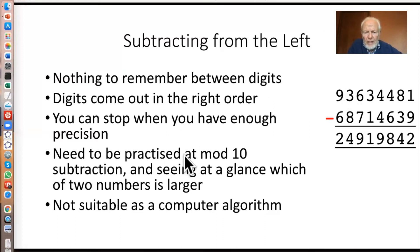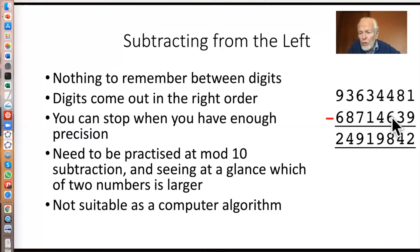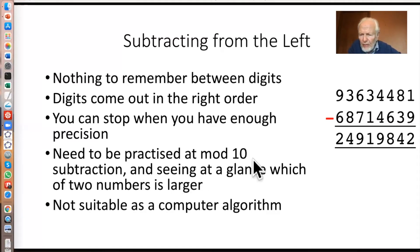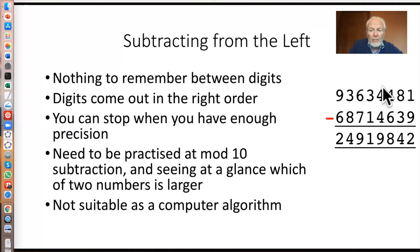The disadvantage is you need to be fairly practiced at mod 10 subtraction, and also this critical thing about seeing at a glance whether this number is bigger than that number. Humans are pretty good at that — you can see more or less instantaneously that that number is bigger than that. But it makes it not really suitable as a computer algorithm, because how is a computer going to tell that that's bigger than that? The answer is it's going to subtract that from that and see whether it's positive or negative — and if you're going to do that, you might as well start from the right. So computers always start from the right.